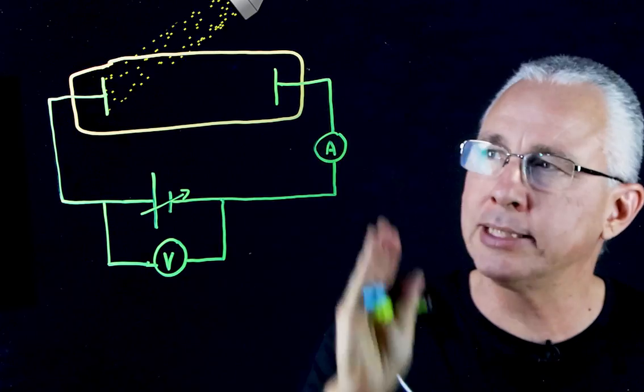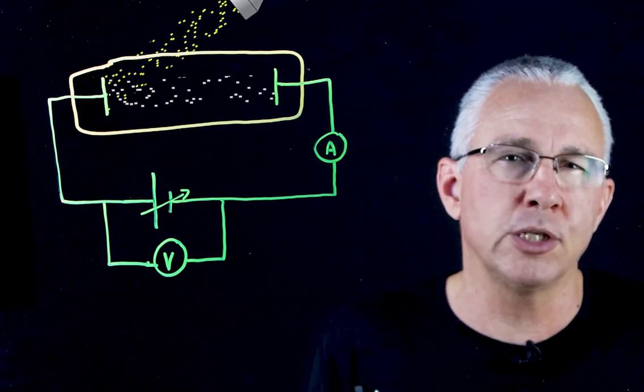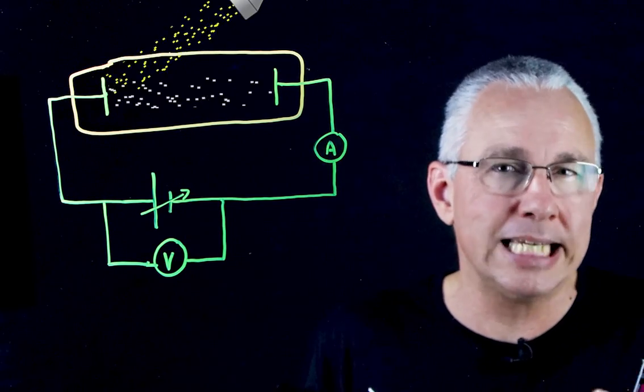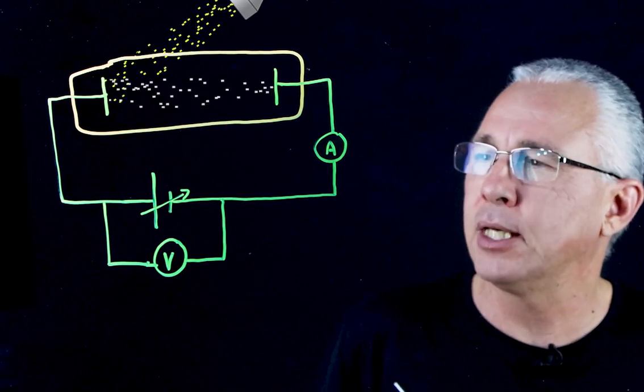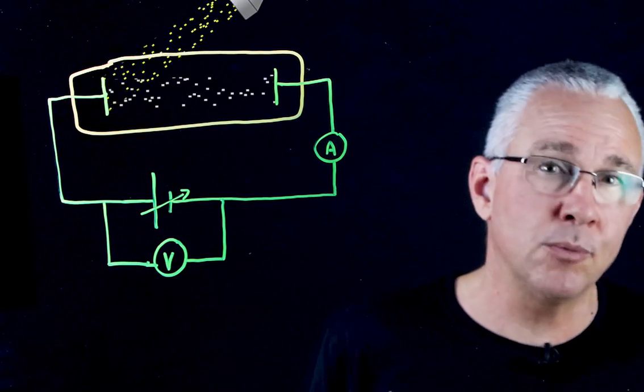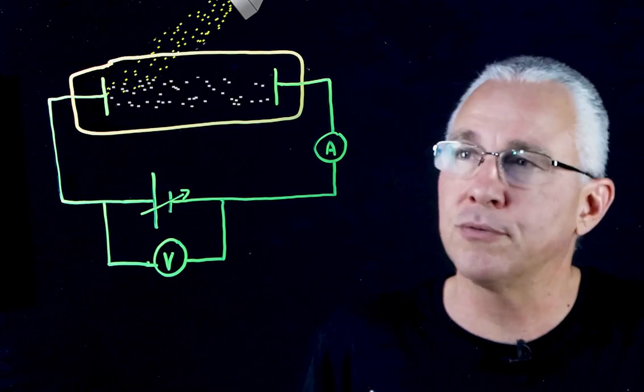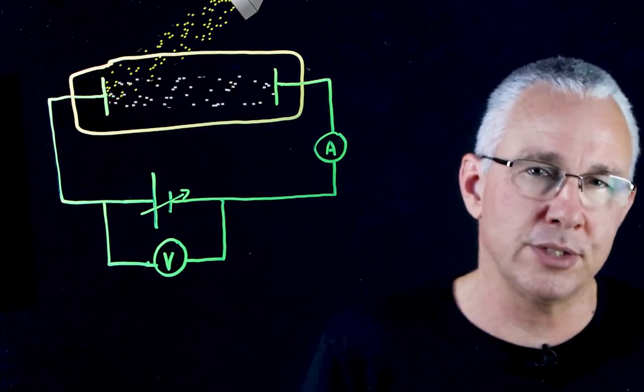We can shine light onto this plate which causes photoelectrons to be emitted as long as the energy of the photons is greater than the work function of the metal. And we have an ammeter which allows us to measure the current, which is the rate of the photoelectrons that are emitted.